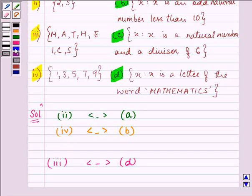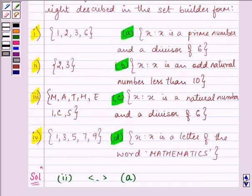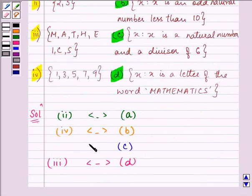Proceeding on to the C part, as we have already known the D part. X is to X is a natural number and a divisor of 6. We know that all these numbers are natural numbers and by all these numbers we can divide 6 exactly. So the answer will be for the C part, it is part 1.